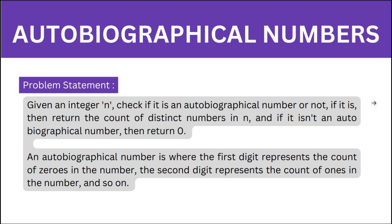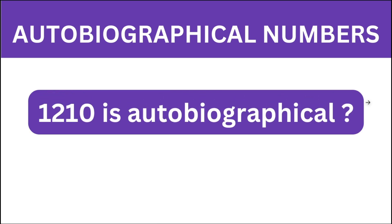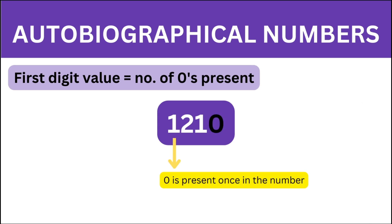Let's properly understand what the problem is trying to tell us. Suppose the number is 1210. We first need to check if it is an autobiographical number. As per the definition, the first digit tells us how many times 0 is present. The first digit is 1, so the number must contain only a single 0. And we do have a single 0 in our number, so that is true.